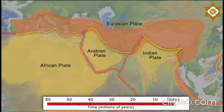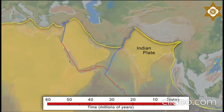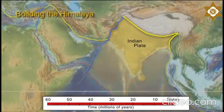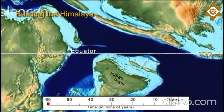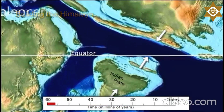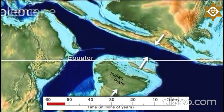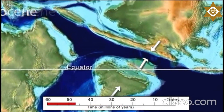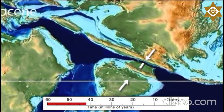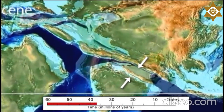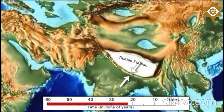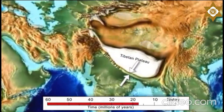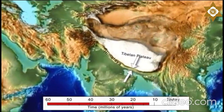Let's go back 60 million years to understand the plate tectonic history of the Himalayan region. About 50 million years ago, the Indian continent collided with southern Eurasia and began constructing the Himalayas and the Tibetan Plateau — the highest mountain range and the largest continental plateau on earth.